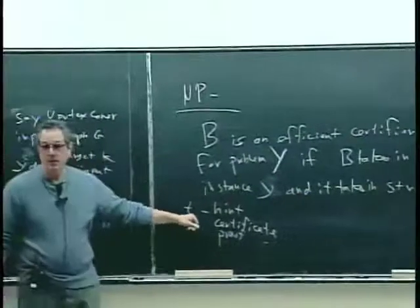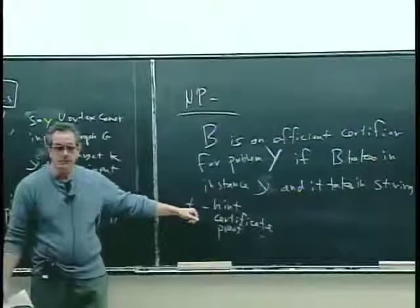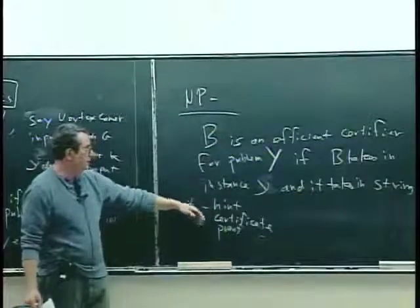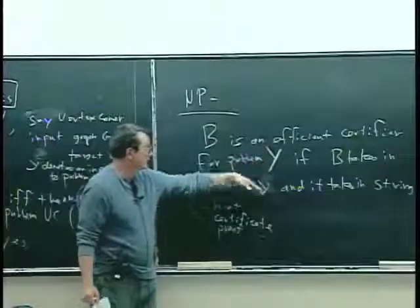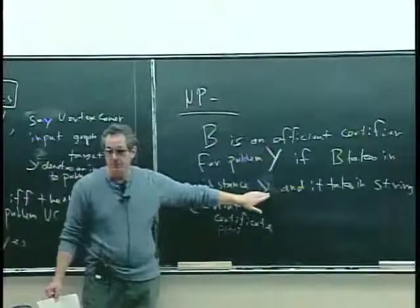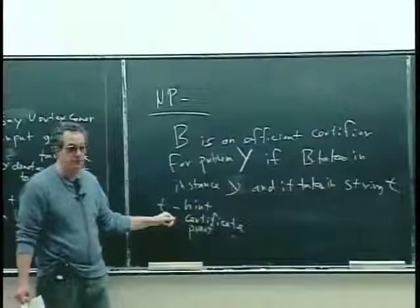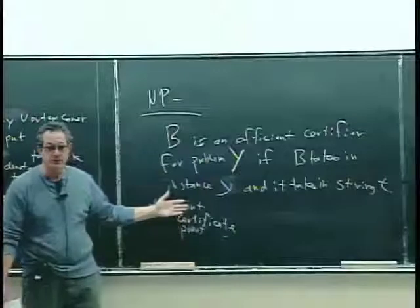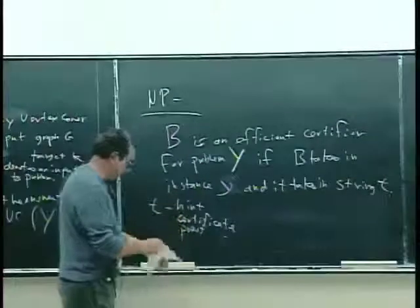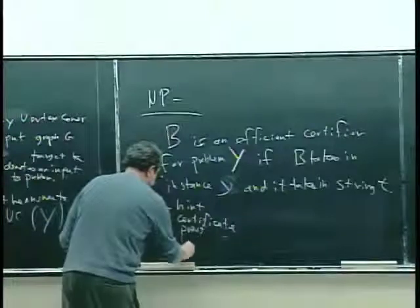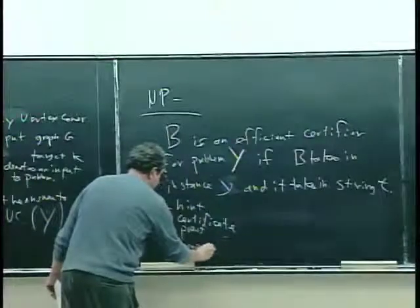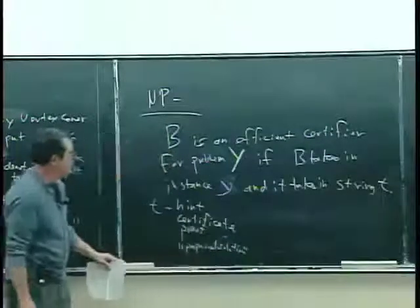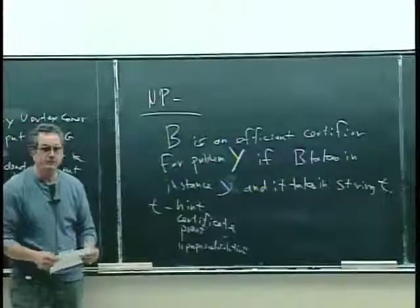It plays the role of the proposed solution. So in the informal version, in comes to the certifier an instance of the problem and a proposed solution. But here we're just vague about what it is — it's just a string, called these various things.